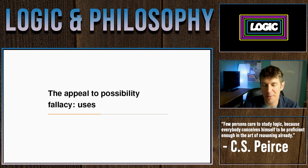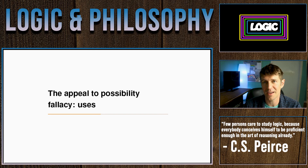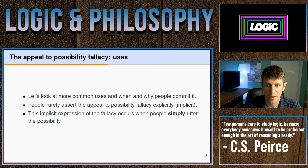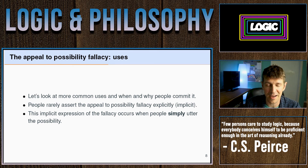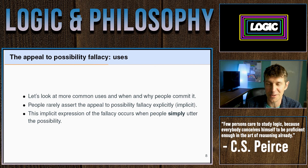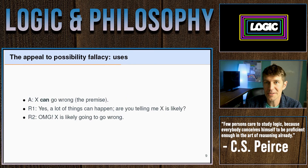What's worthwhile is looking at more everyday uses. People aren't really explicitly arguing from the possibility of winning the lottery to its actuality. The key point about this fallacy is that people rarely assert the conclusion. What they'll do instead is simply assert the premise — they'll appeal to the possibility of something occurring and then stop there. They'll rely on their listeners to actually draw the conclusion themselves. So they're essentially saying, 'Hey, did you know something is possible?' and encouraging you to conclude that because it's possible, it's likely.